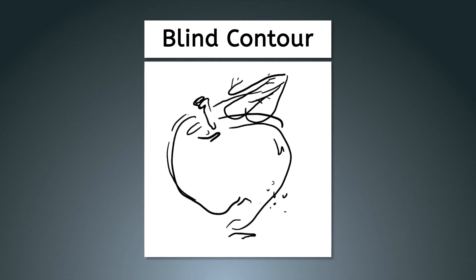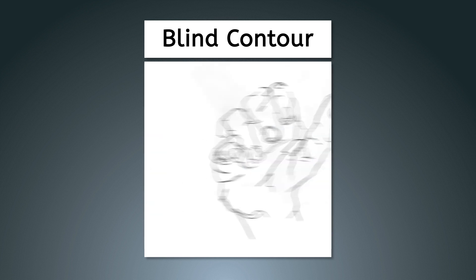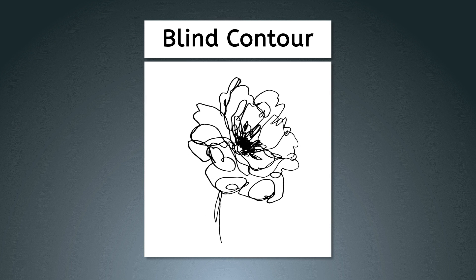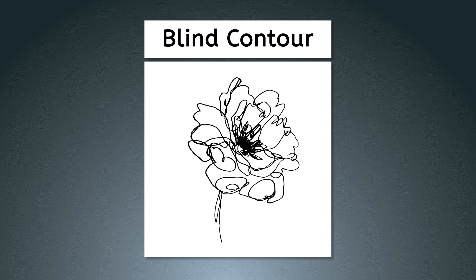Blind contour drawings are a type of exercise where an artist draws the outline and basic details of an object without looking at their paper or lifting their pencil. This technique was introduced in a book written for drawing skill building and has become a staple process for beginning artists ever since. Blind contour is not a process to use for sketching or creating finished drawings — its primary function is as a method of training for artists.